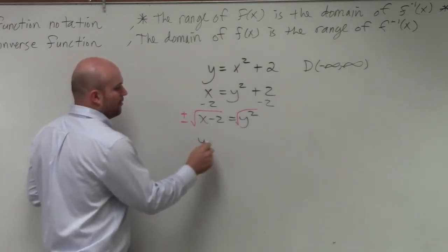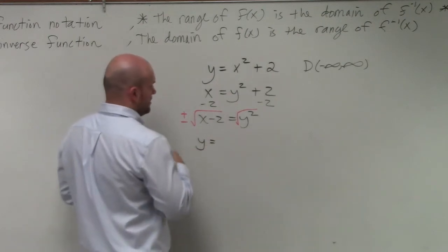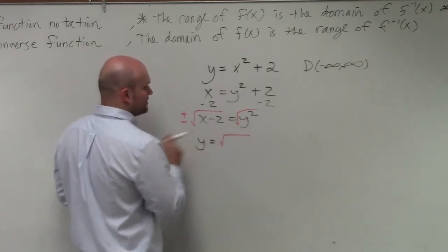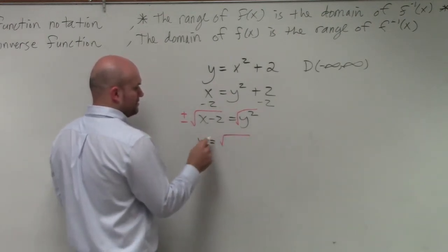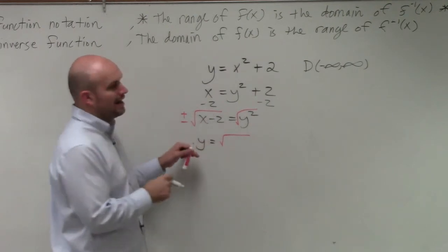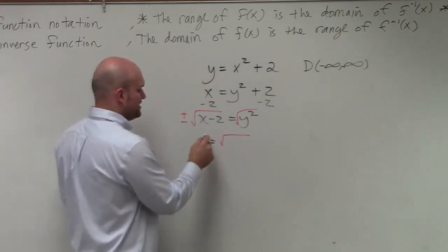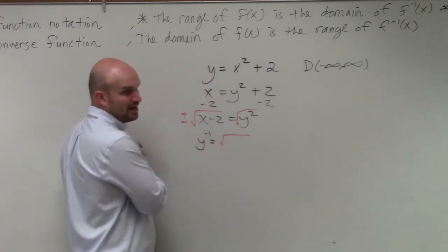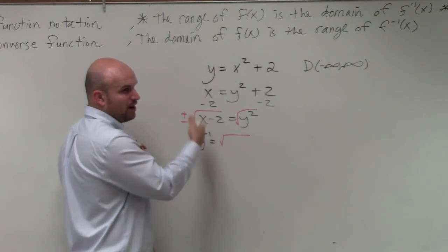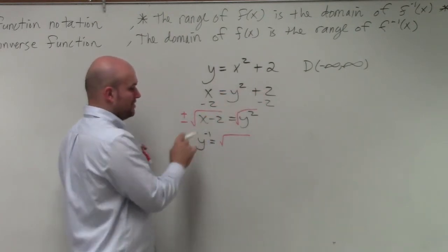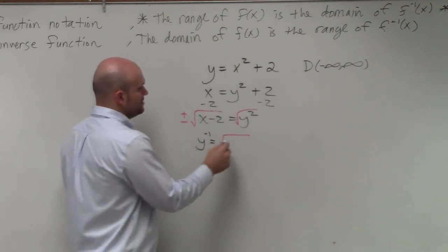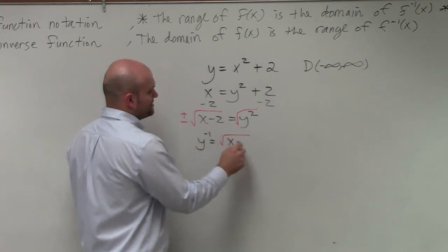So therefore, y equals positive square root of... all right, so there's y. And now instead of replacing y with f inverse, we're not talking about function notation. We can just think of that as y inverse. So we can replace y, instead of with f inverse of x, we can place it with y inverse.